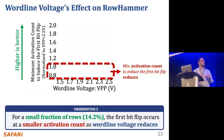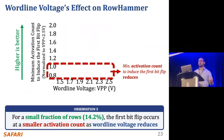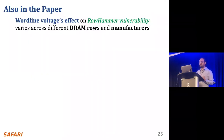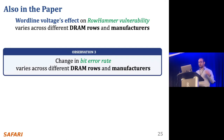So far, this shows that rowhammer vulnerability reduces with reduced wordline voltage. We have further analysis in the paper showing how wordline voltage affects rowhammer vulnerability across different DRAM rows and manufacturers in terms of bit error rate and the activation count at which the first bit flip occurs.